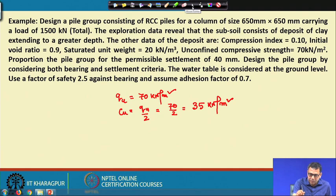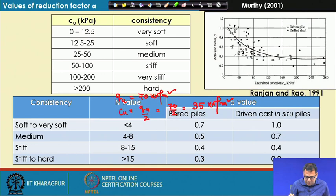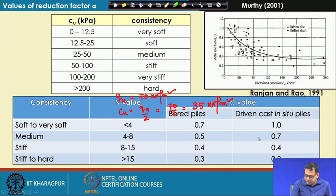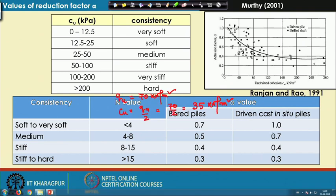With Cu = 35 kN/m², this is a medium clay. For a medium clay with RCC piles, the adhesion factor is 0.7, which is the value we will use in this design.